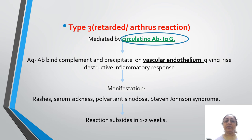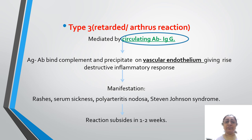Type 3 is the retarded Arthus reaction, mediated by circulating antibodies IgG. The antigen-antibody complex binds complement and precipitates on vascular endothelium, giving rise to a destructive inflammatory response. This ultimately manifests as rashes, serum sickness, polyarthritis, nodosa, Stevens-Johnson syndrome, and the reaction will subside within 1 to 2 weeks.